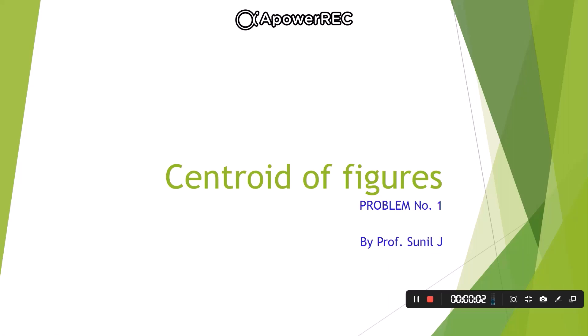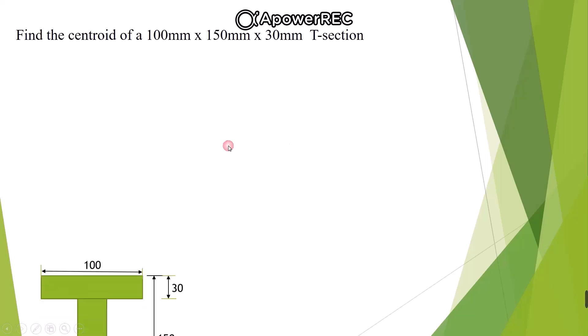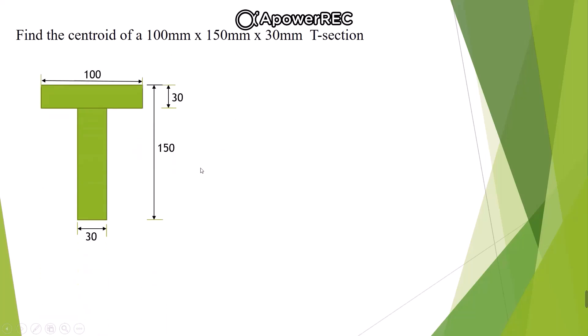In today's session we will be continuing our discussion on centroid calculation. Let us take the first question — we need to find out the centroid of a T-section. The dimensions are given as 100 mm by 150 mm by 30 mm, and we will draw the T-section first.